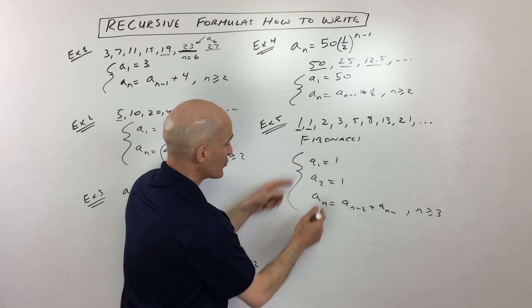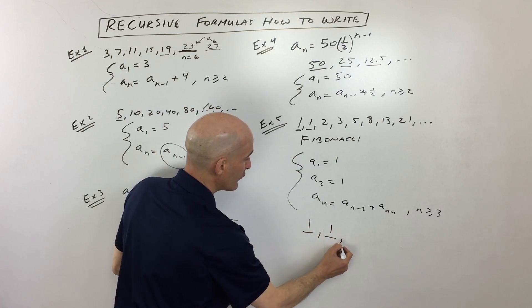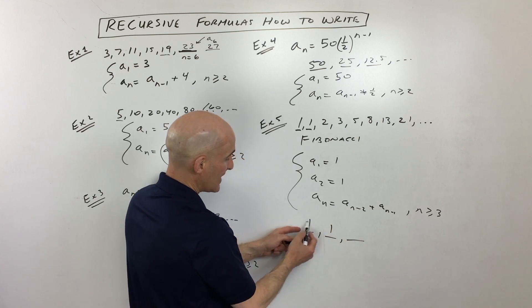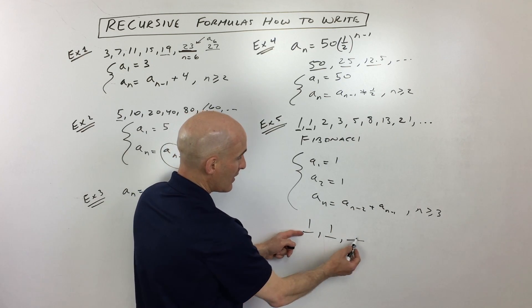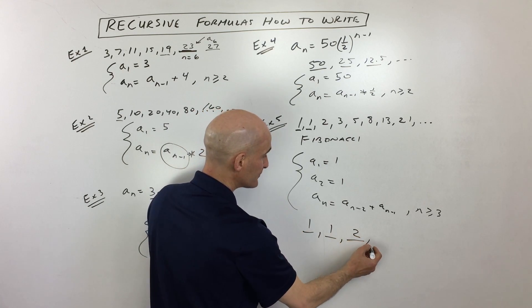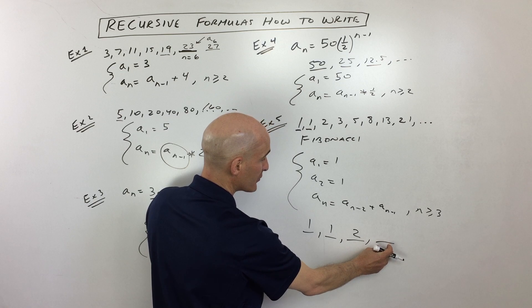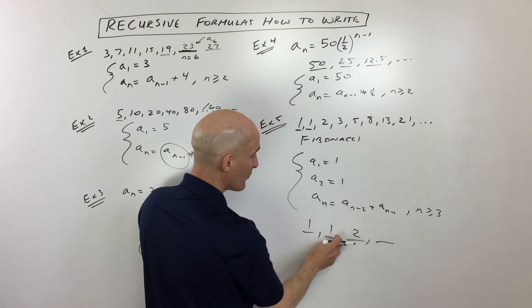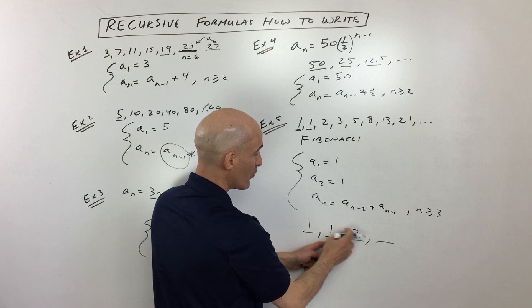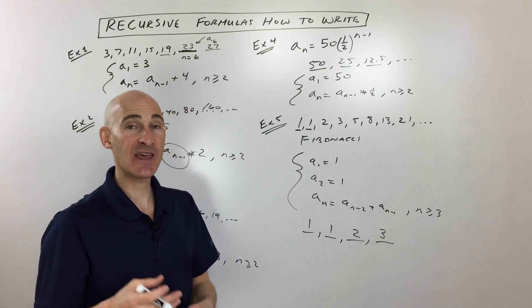So they're giving us the first two terms, 1 and 1. If we want to find the third term, we go to the 3 minus 2, which is the a sub 1th term. And then the 3 minus 1, which is the a sub 2th term. And we add those together and we get 2. If you want to find the a sub 4th term, 4 minus 2 is 2. So we go back to the second term. 4 minus 1 is 3. We go back to the third term. We add those together and we get 3.